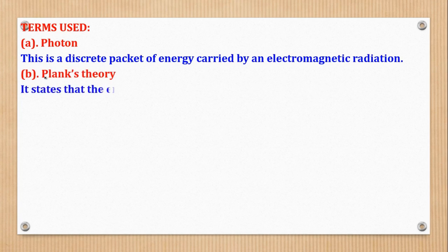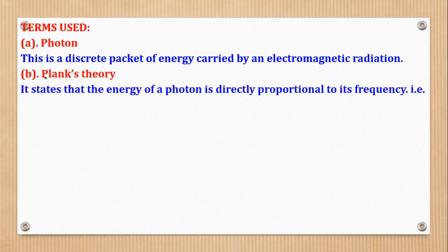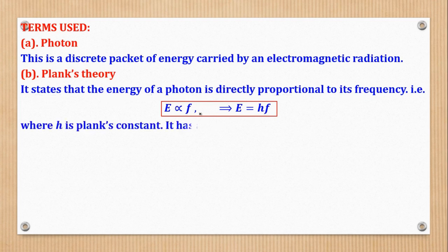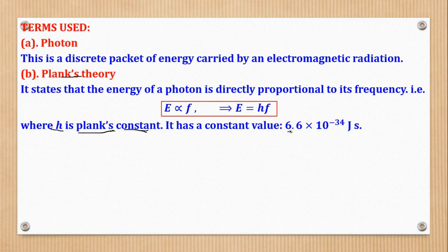The next term is Planck's theory. Planck's theory states that the energy of a photon is directly proportional to its frequency. Mathematically, E is directly proportional to F, and when we put a constant of proportionality, it becomes E = hF. That h is what we call Planck's constant, and it has a constant value of 6.6 × 10⁻³⁴ joule-seconds. This value will be given in the question, so there is no need to memorize it.